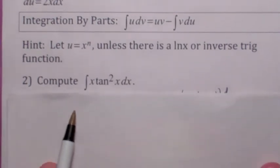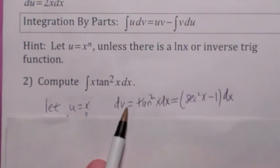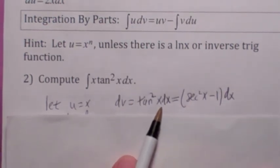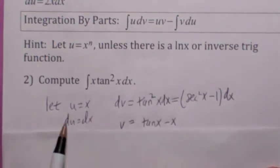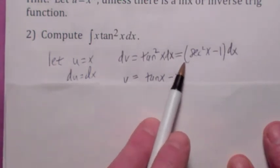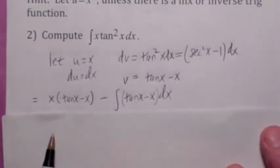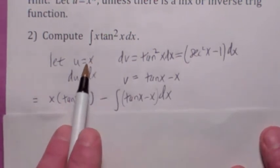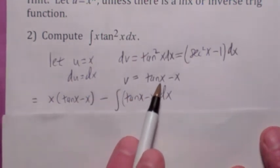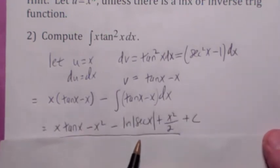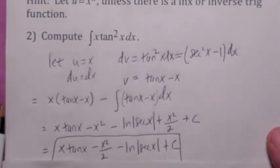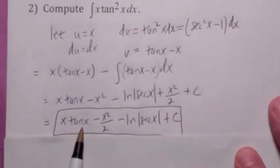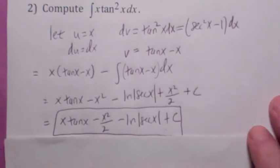In this first example, to integrate x tan²(x) dx, let u equal x and dv equal tan²(x) dx. We'll change tan²(x) to sec²(x) minus 1. Then du becomes dx and v becomes tangent x minus x. Integration by parts gives u times v: x times (tan x minus x), minus the integral of v du. That integral is easy — the integral of tangent is ln|sec x|, and the integral of x is x²/2. Distributing the minus sign and combining like terms, the final answer is x tan(x) minus x²/2 minus ln|sec x| plus C.